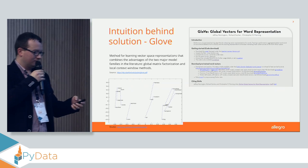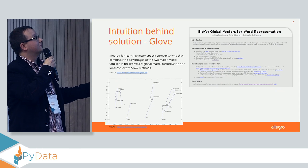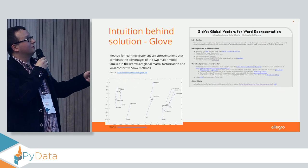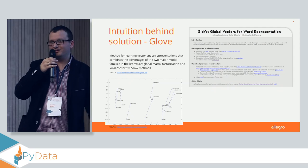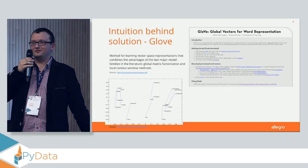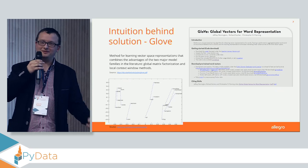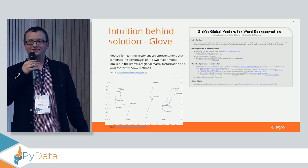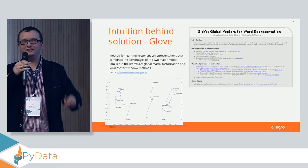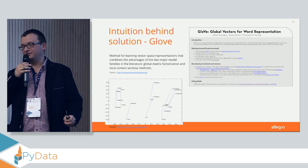GloVe works very well with the famous analogy task. For instance, if you take the vector for 'king', subtract 'man' and add 'woman', you receive something similar to 'queen'. So you can have very nice language relationships encoded into these vectors.